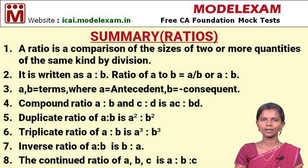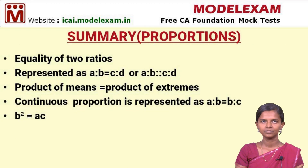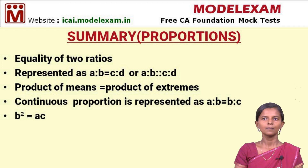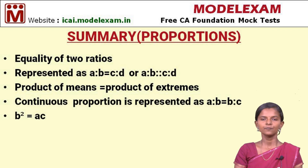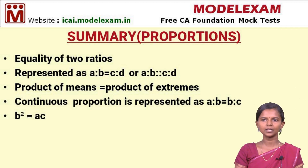Next we will see the summary of proportions. The first point is equality of two ratios is called proportion. If the ratios A is to B and C is to D are in proportion, we write that as A is to B equals C is to D, or A is to B is proportional to C is to D. Here we have to remember the cross product rule: product of means is equal to product of extremes.